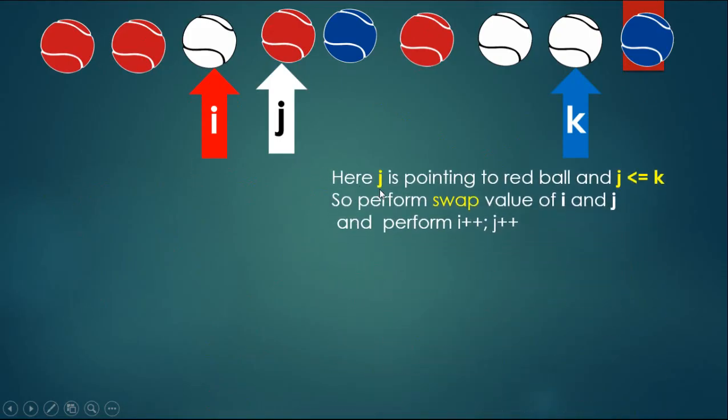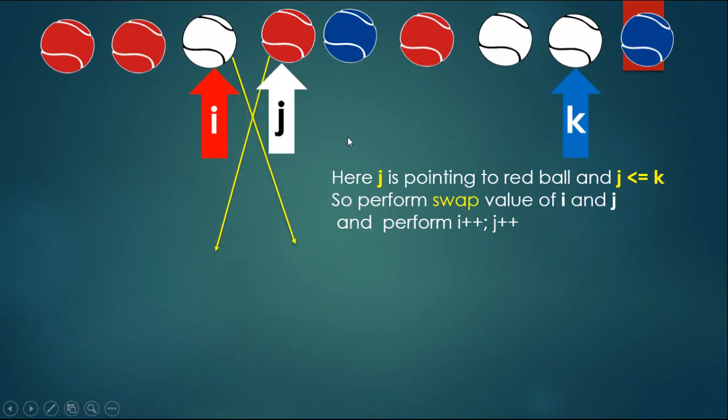Here j is pointing to a red ball and j less than or equal to k, so perform swap of value of i and j, and perform i++, j++.